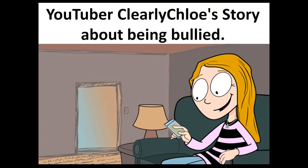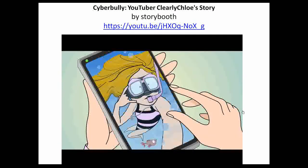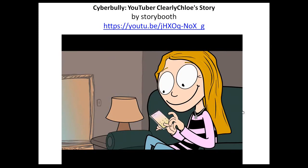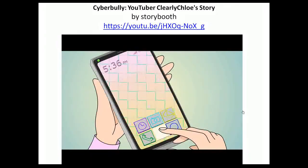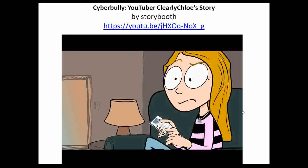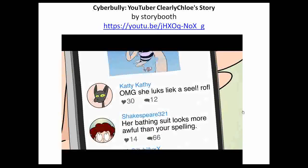Now let's watch YouTuber Clearly Chloe's story about being bullied. I posted a picture on my Instagram of me underwater — I thought it was such a cool picture because I had just gotten my new GoPro. All of a sudden, like a million texts started coming through on my phone from a group chat I was part of. The first text was a screenshot of the picture I had just posted on my Instagram. I was kind of confused, so I read the text below it and it said really mean things about my body and how I looked.